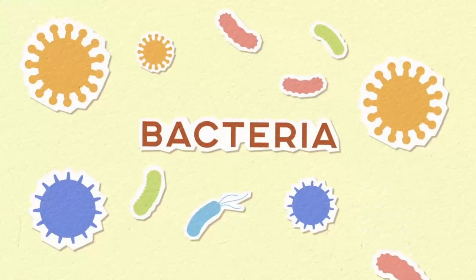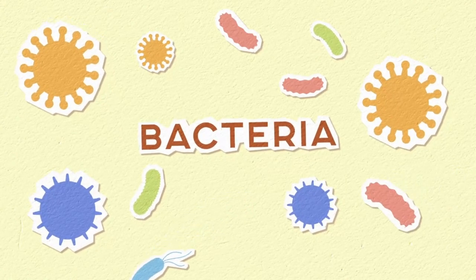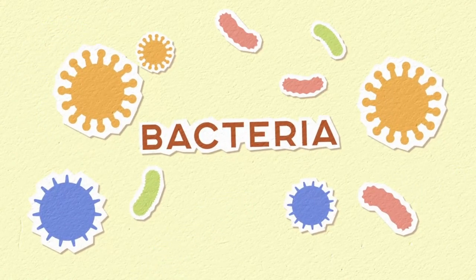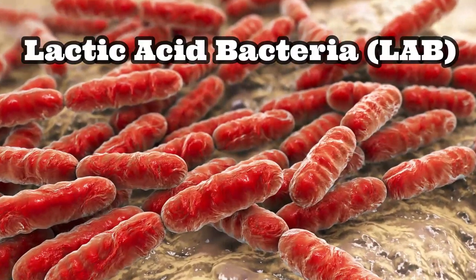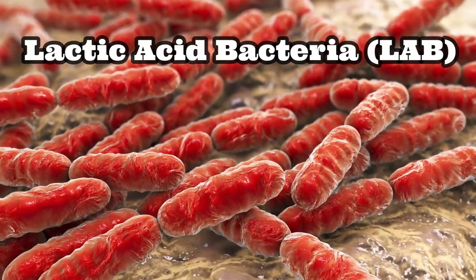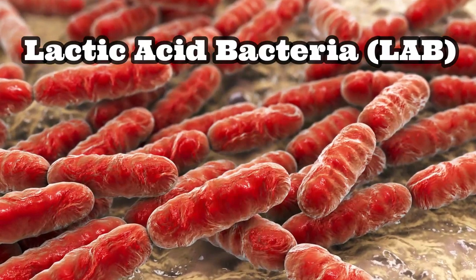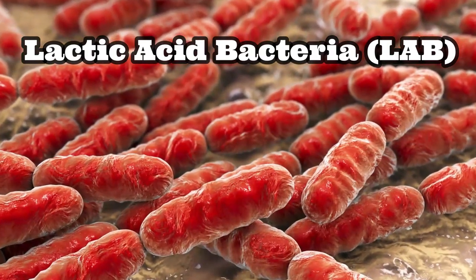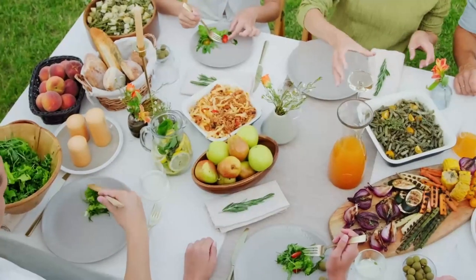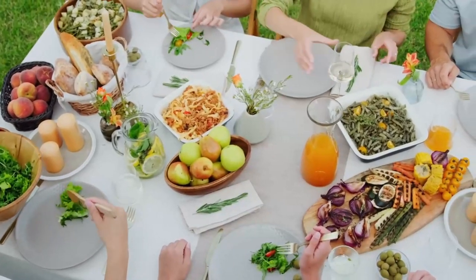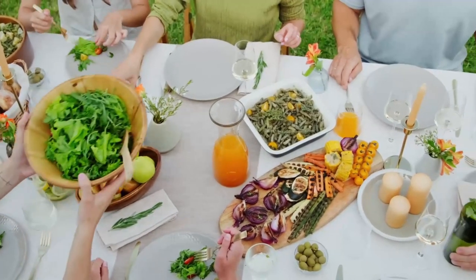Many bacteria produce acids as part of their metabolism, and this can lower the pH of their environment. Lactic acid bacteria is an example — a large and diverse group of gram-positive bacteria that produce lactic acid as the major end product of the fermentation of carbohydrates. The lactic acid can inhibit the growth of pathogenic and food-spoilage microorganisms in food.